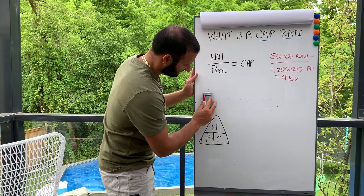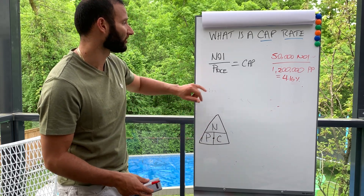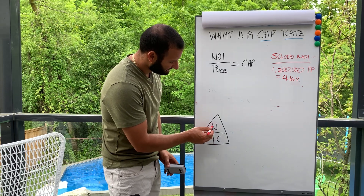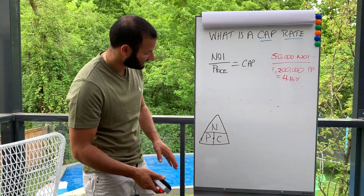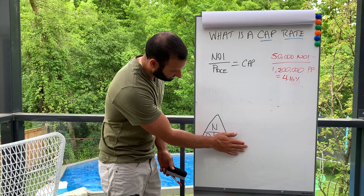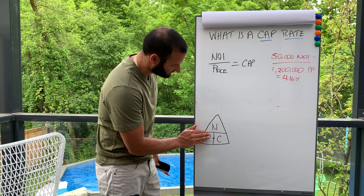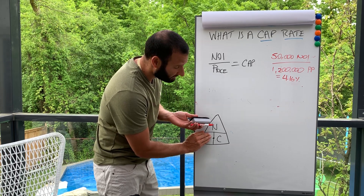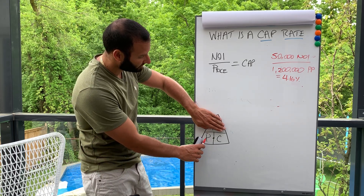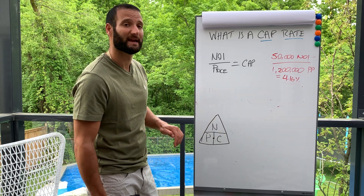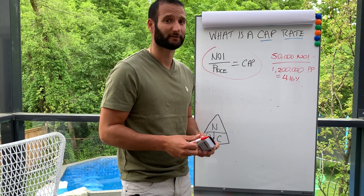One more thing: this little triangle is a simple tool you can write in the corner of a piece of paper. N signifies Net Operating Income (NOI), P signifies price, and C signifies cap rate. To find the cap rate, cover C — the formula is net income divided by price. To find the price, cover P — take net income divided by the cap rate percentage. To find the net income, cover N — take purchase price multiplied by the cap rate percentage. It's a holistic formula and a good one to know — it will make you money.